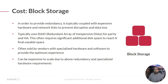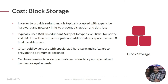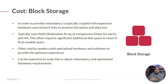First, let's talk about the cost of block storage. In order to provide redundancy, it's typical that this is coupled with expensive hardware and network links to prevent disruption and data loss. It typically uses a RAID — a redundant array of inexpensive disks — for parity and high availability. This often requires a whole bunch of extra hardware that doesn't get used by the end user, but rather is used for parity or as a backup if one of the other disks fails, so you won't lose any of your data.